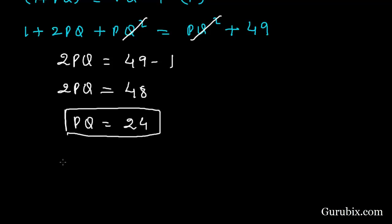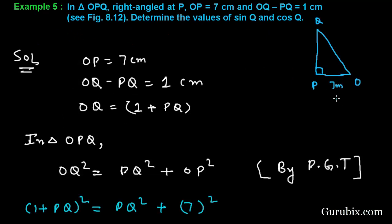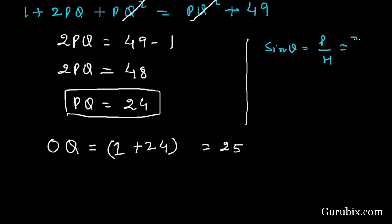And OQ will be 1 plus 24, this means 25. Now we shall calculate sine Q and cos Q. Sine Q will be perpendicular upon hypotenuse. This is perpendicular, this is base, and this is hypotenuse. We have calculated it: 25, this is 24, so it will be 7 over 25, and cos Q will be 24 over 25. This is the solution of the question. Thank you.